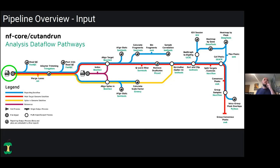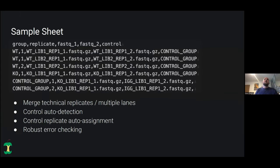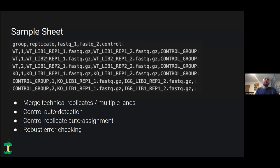The first thing I want to talk about is the sample sheet — it's one of the new features so I wanted to touch on it. The new sample sheet lets you define where your samples are and the structure of the experiment. You can merge technical replicates or data from multiple lanes by having the same sample ID and replicate number; those will automatically be merged together, which is really useful when you have sequencing from multiple lanes.